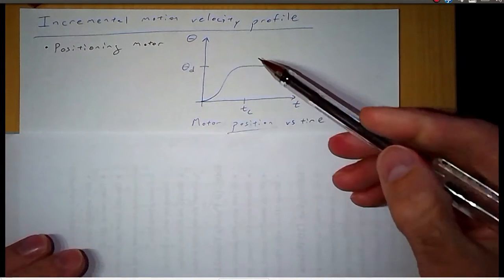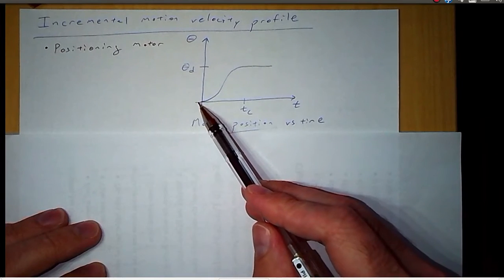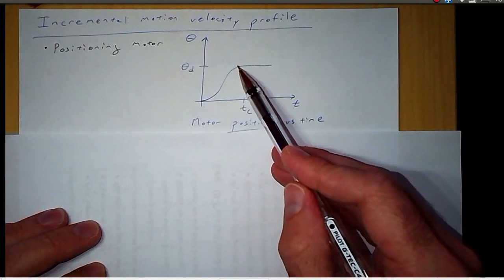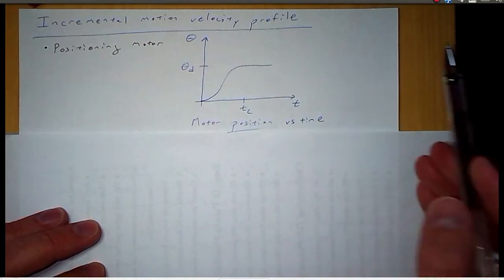Here's a graph showing the angular position of the motor versus time. So it starts off at zero, and then in time tc it's reached our desired position, theta d. So after that the position stays constant.